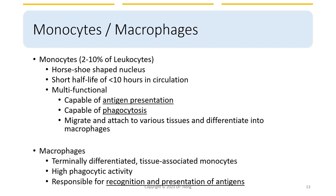When we talk about monocytes and macrophages, we put them together because monocytes are actually immature macrophages. They can do a little bit of both jobs — like dendritic cells they can do antigen-presenting, and like neutrophils they can do phagocytosis. However, monocytes don't live very long — less than 10 hours in circulation. A characteristic morphology of monocytes is a horseshoe-shaped nucleus. They can migrate and attach to various tissues, then differentiate into macrophages. Macrophages are terminally differentiated tissue-associated monocytes. Their job is to eat — they are highly phagocytic — and they are also responsible for antigen recognition and presentation.